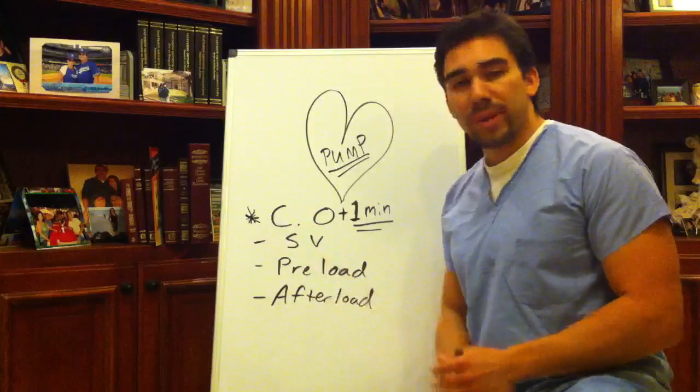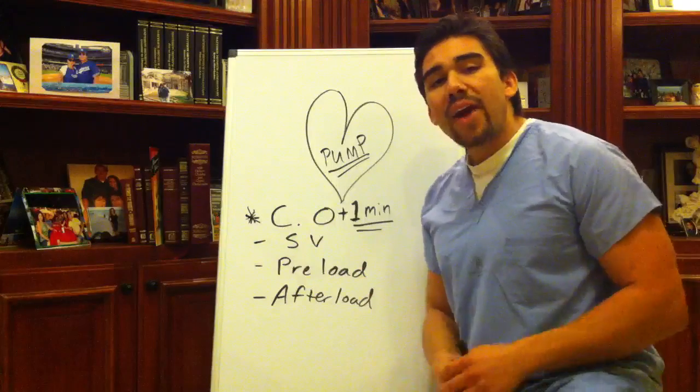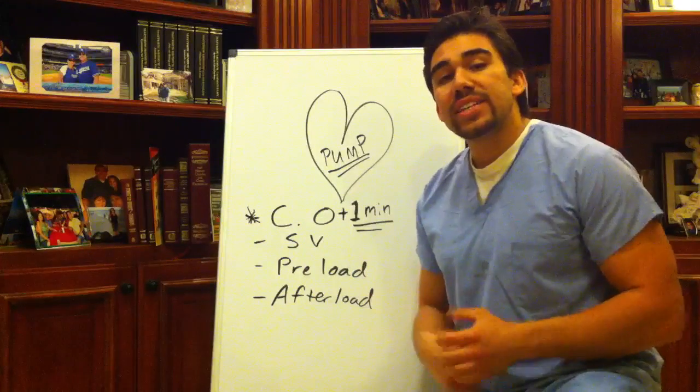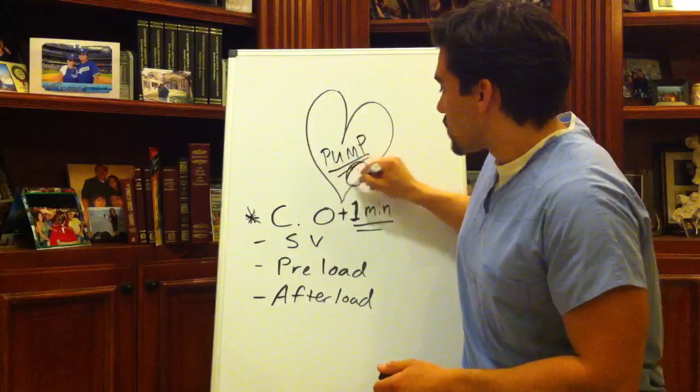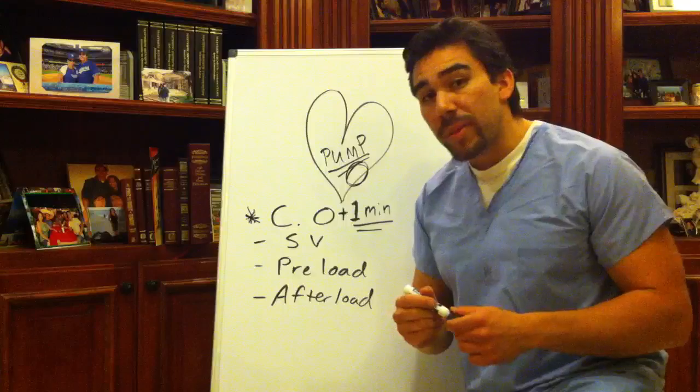So let's start with cardiac output. Cardiac output is the amount of blood that is ejected from the left ventricle of your heart out to the rest of the body in one minute.